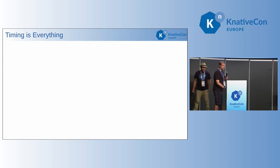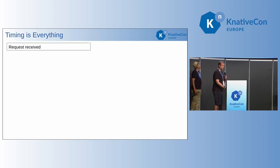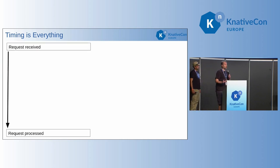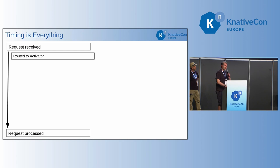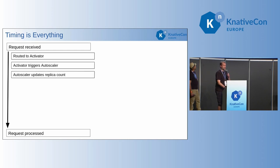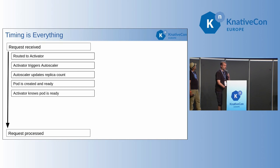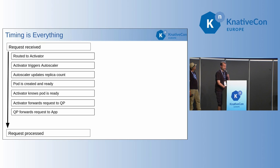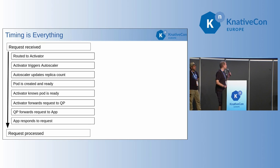Talking in terms of timing — what are the things that have to happen between when the request is received and when it is processed? The request comes in, it gets routed to the activator. The activator triggers the autoscaler. The autoscaler updates the replica count. The pod is created and ready. The activator knows the pod is ready. The activator forwards the request to Qproxy. Qproxy forwards it to the app. The app responds and the request is processed.